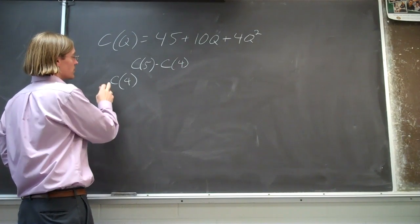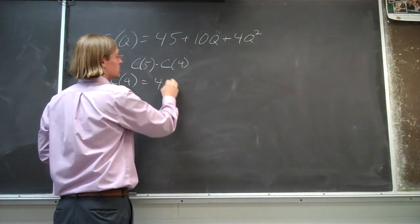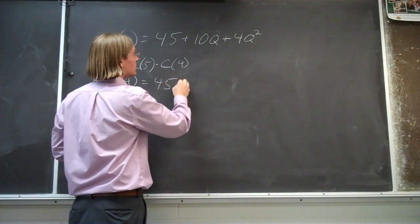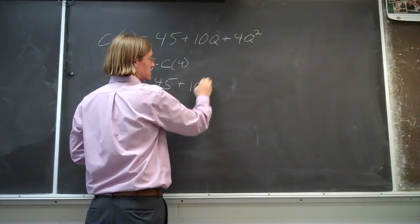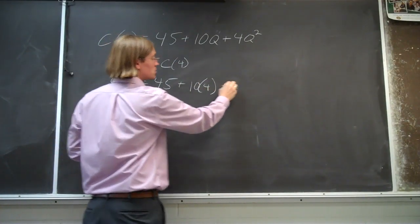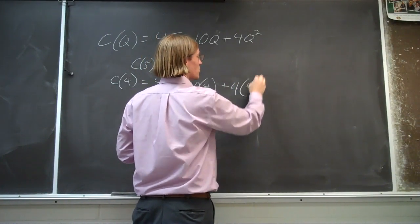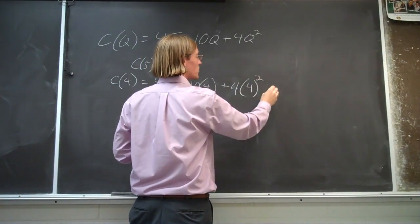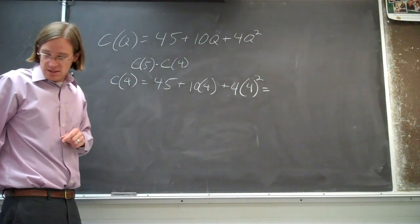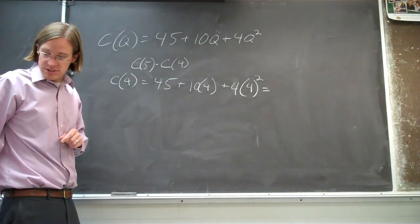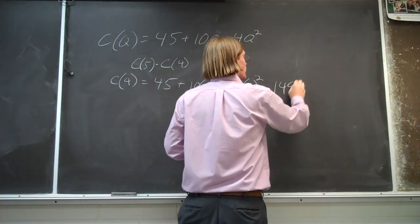So we can start off and solve for the cost of producing four units. That's going to be 45 plus 10 times 4 plus 4 times 4 squared, and off the top of my head, that's 149.